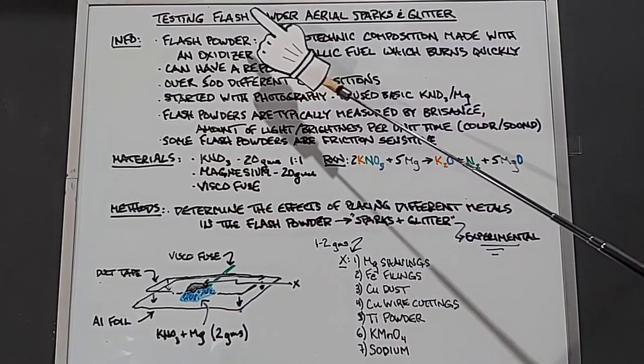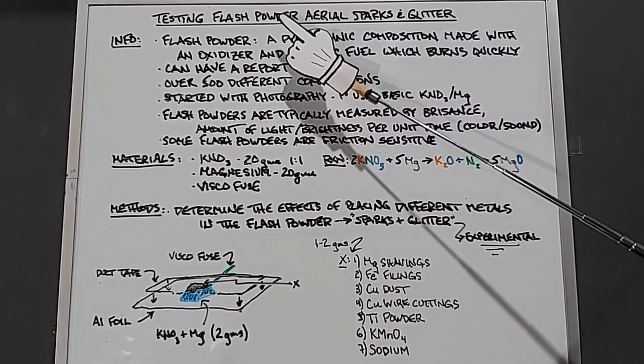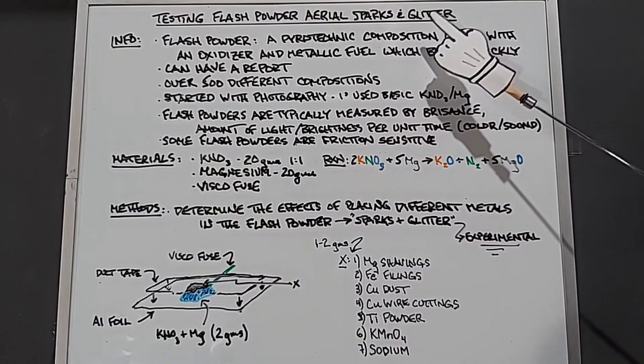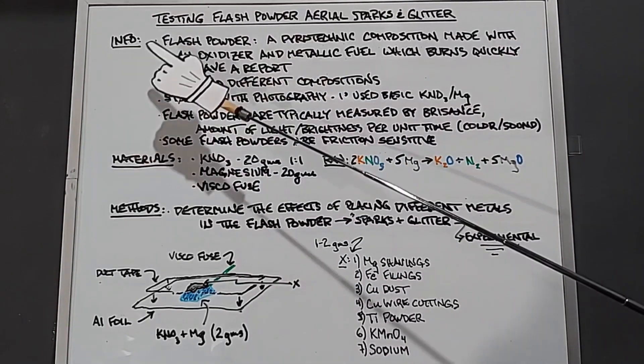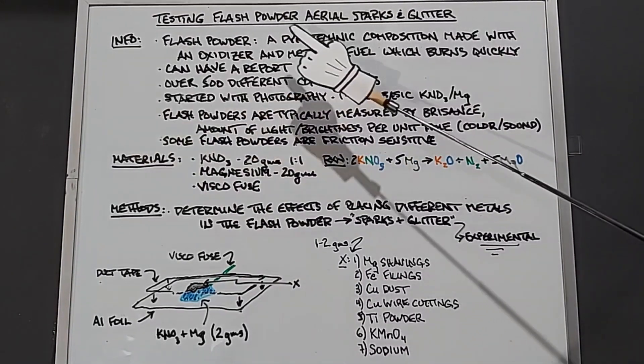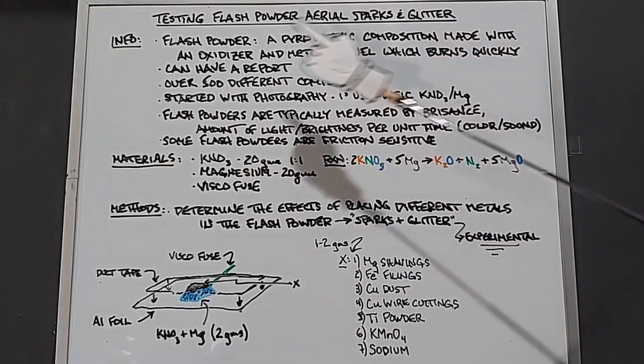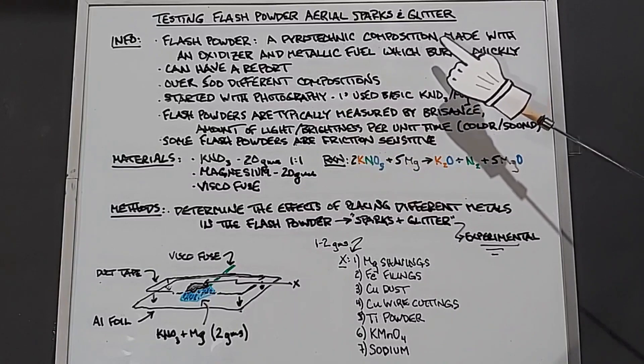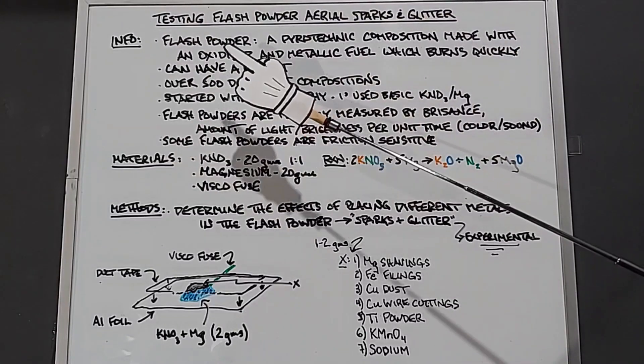In this video we're going to look at testing flash powders, nothing really new there, but while we're doing that, we'll be testing aerial sparks and glitters as the flash powder goes off. Flash powders are pyrotechnic compositions made with an oxidizer and a metallic fuel, usually which burns quickly.